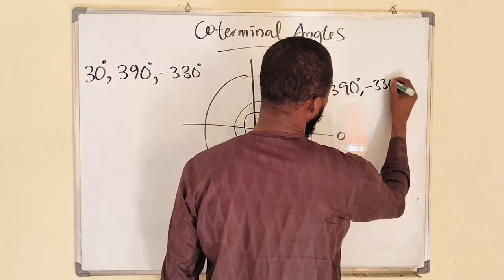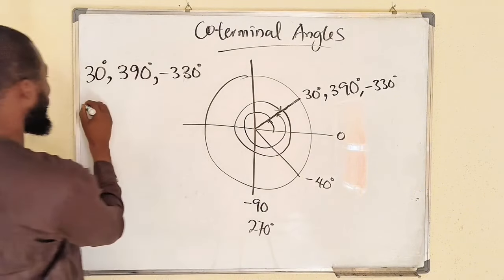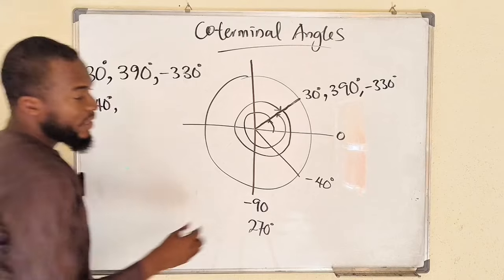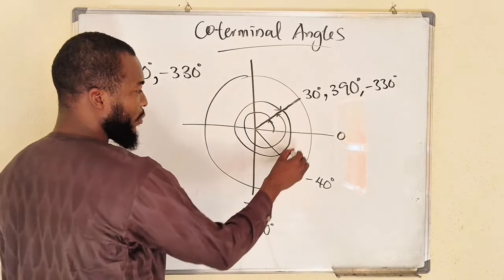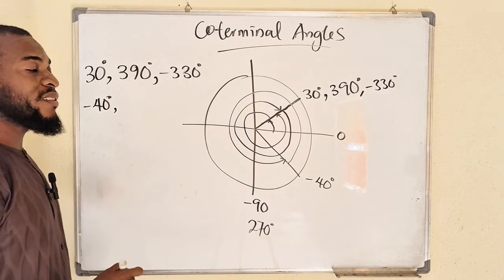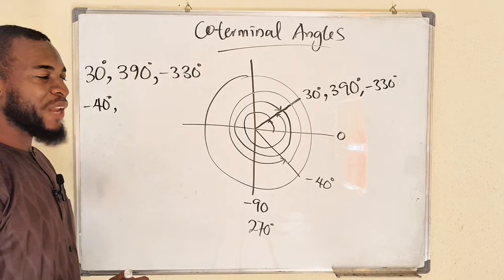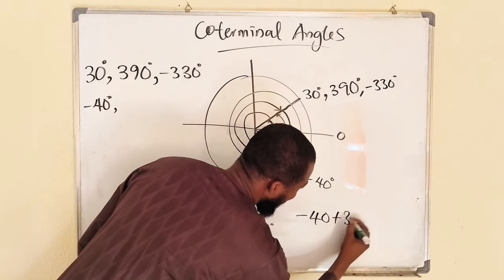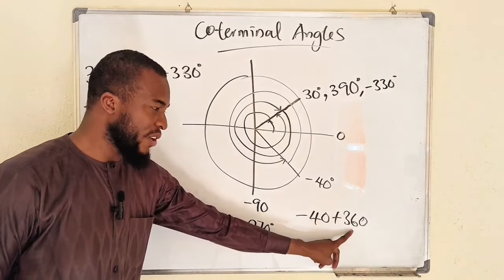Now consider negative 40 degrees. If you decide to move in the positive direction, it means you have added 360 degrees, which is going to make it 320 degrees. Because adding 360 to negative 40 is just like subtracting 40 from 360 degrees, which gives us 320 degrees.